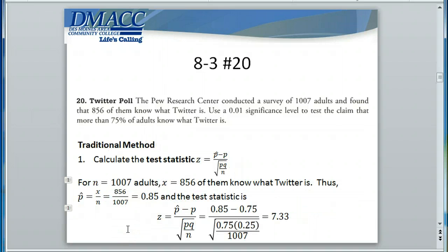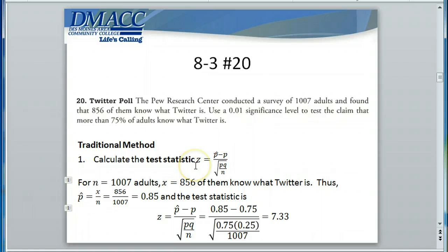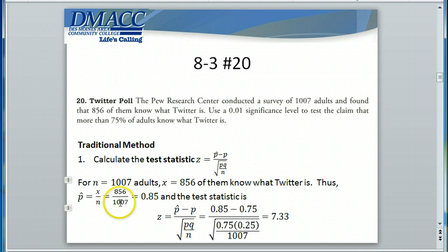For the first step, calculating the test statistic, we're going to use the sampling distribution of proportions and the central limit theorem to calculate the z-score. We take the sample proportion p-hat, subtract the value of the population proportion, and divide by the standard deviation of the sampling distribution of proportions to get the test statistic. The sample proportion is 856 out of 1,007, which is approximately 85%.